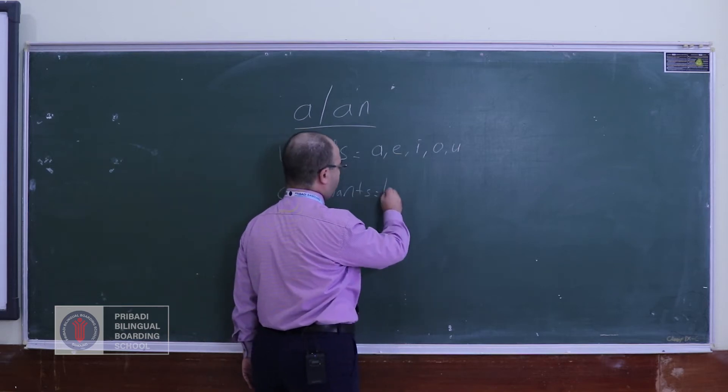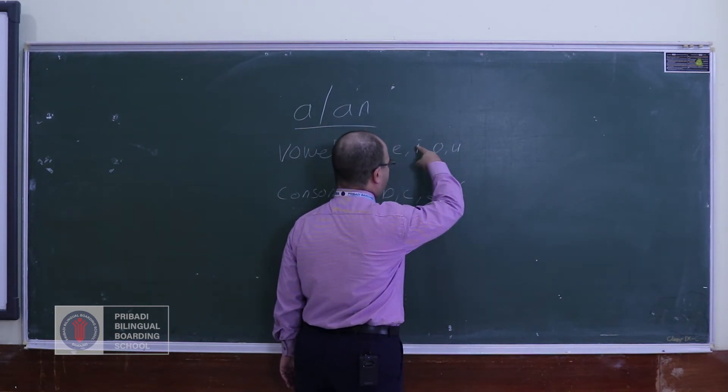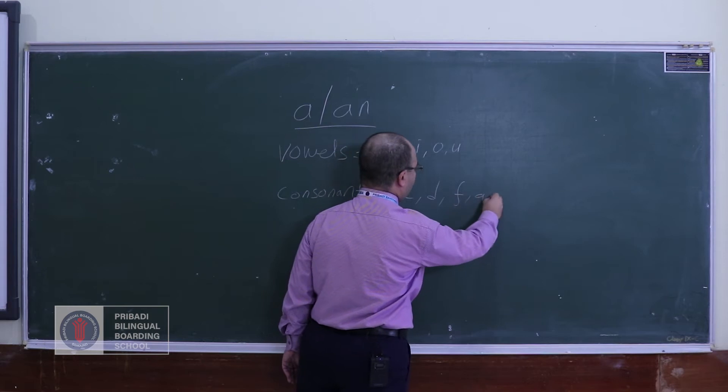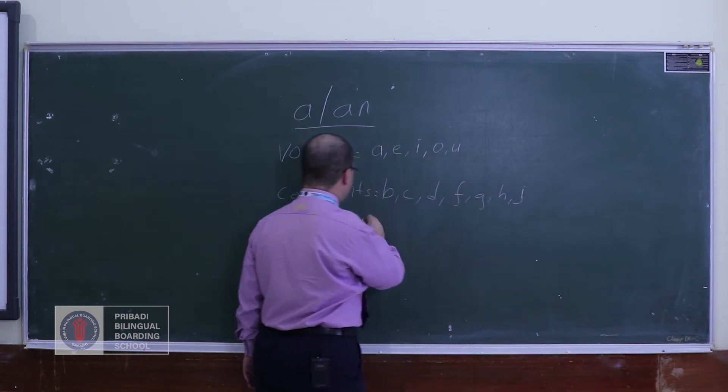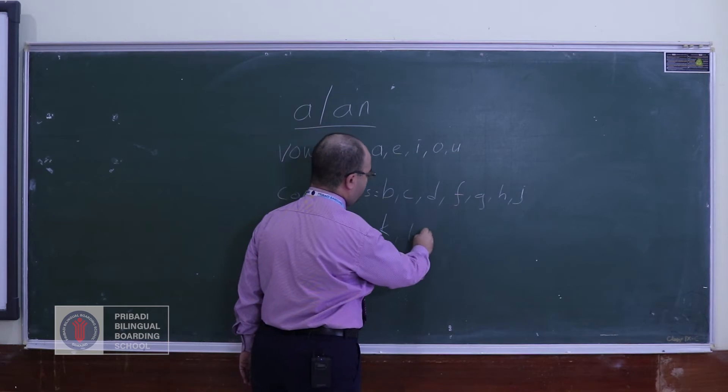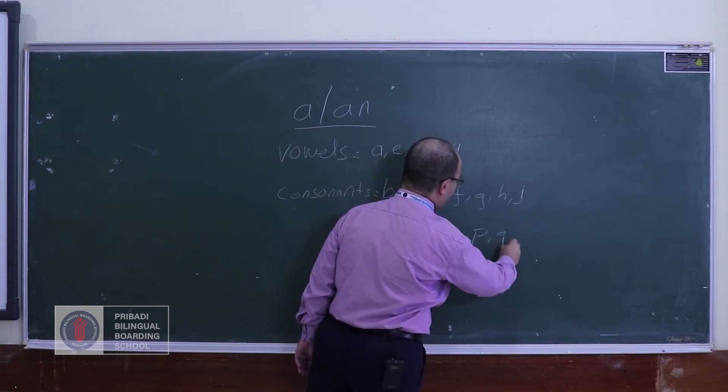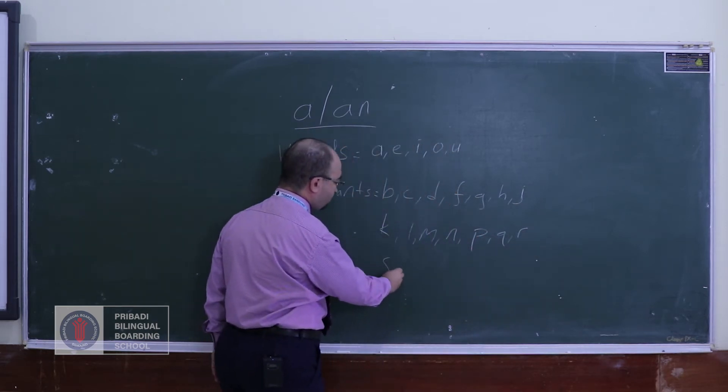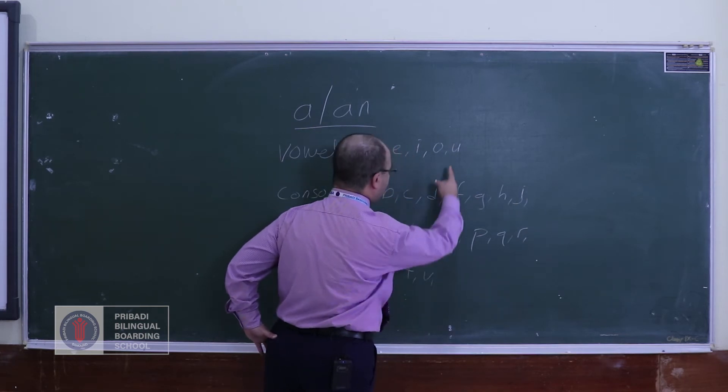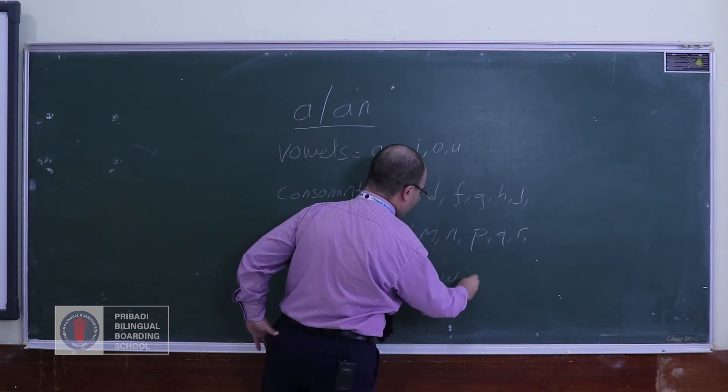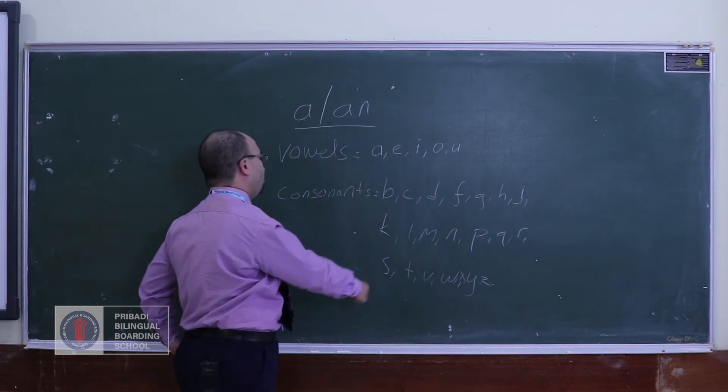These are called vowels in English, and all the rest of the alphabet are called consonants like b, c, d, f, g, h, j, k, l, m, n, p, q, r, s, t, v, w, x, y, z. These are the consonants.